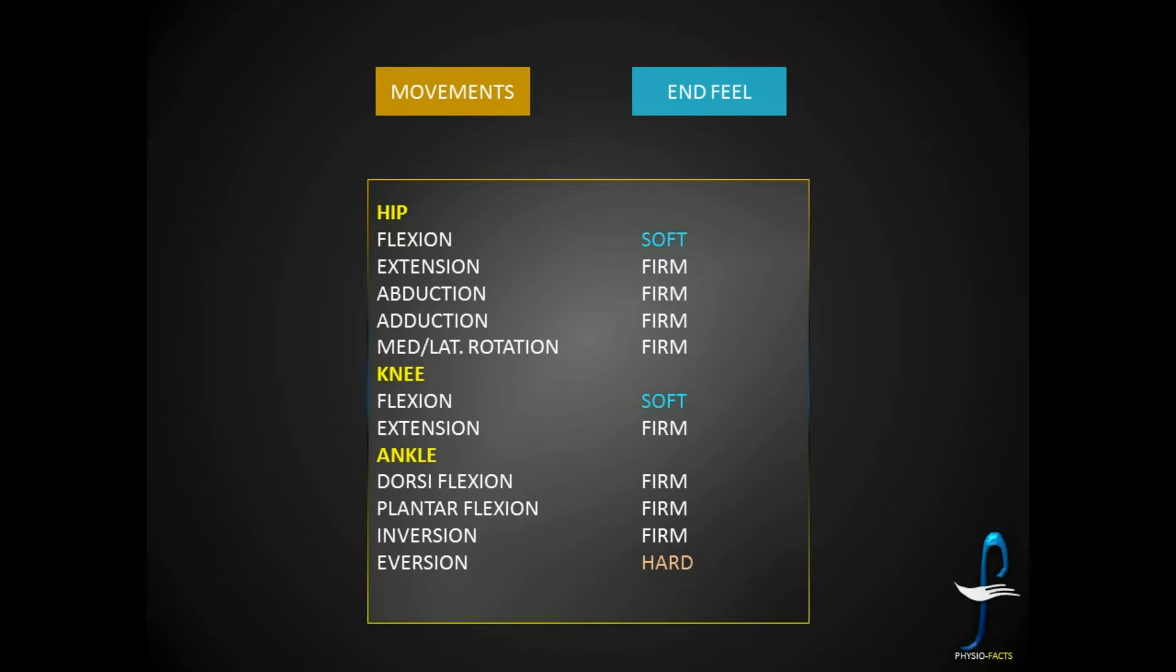Ankle eversion is showing hard end feel. This is something we have to really appreciate because when you read each end feel of each movement, it is giving depth of knowledge about the end feels. Hard end feel examples: eversion, and in upper limb, radial deviation, pronation, and elbow extension.